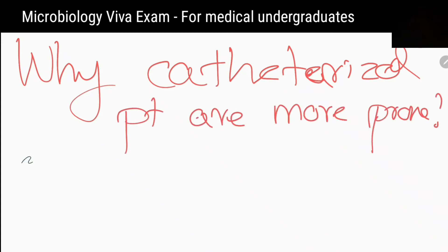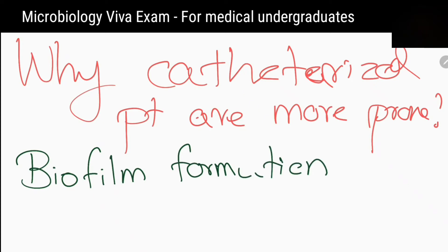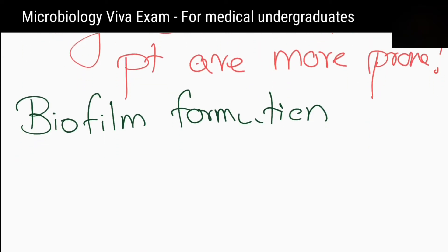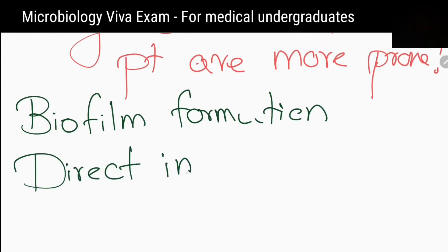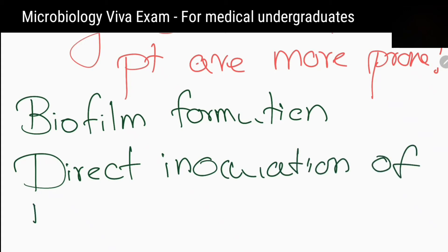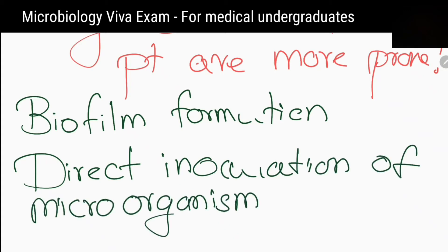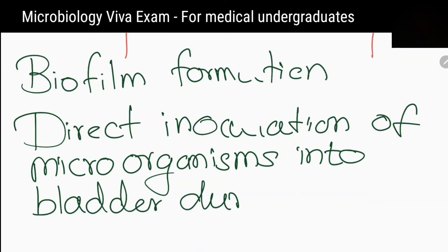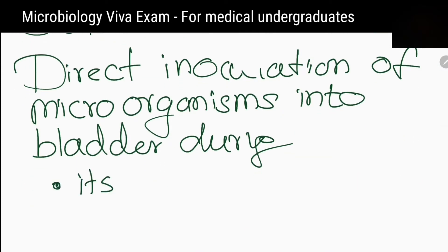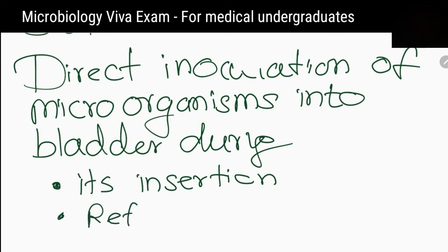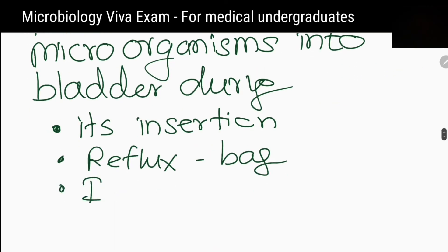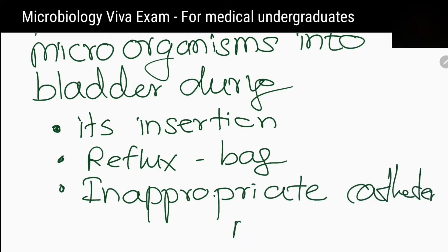Why are catheterized patients more prone? Because there is biofilm formation along both internal and external surfaces of the catheter that can ascend into the bladder. Also, the catheter allows direct inoculation of microorganisms into the bladder during its insertion, or reflux of infected urine from the drainage bag, or by inappropriate catheter manipulation.